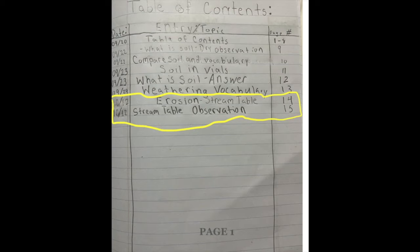I have created a Google slide to show you what is expected for you to have on each page. We are going to go through the table of contents. You can also find this document in your science Google Classroom under Science Journal.